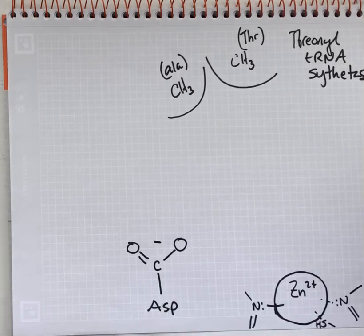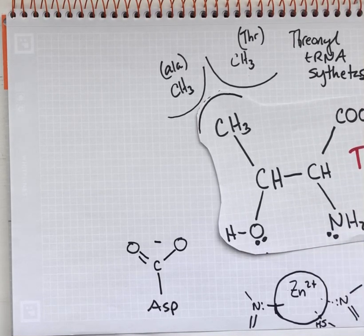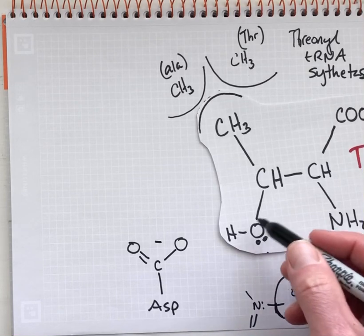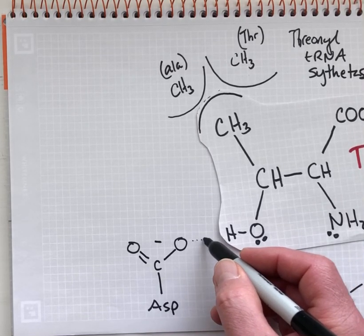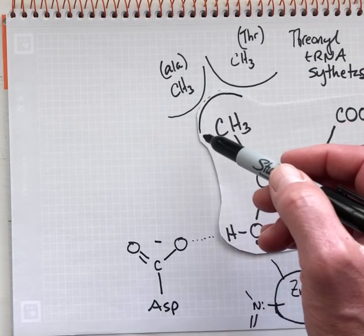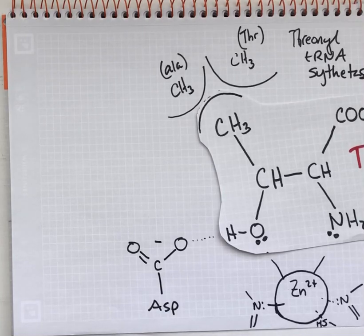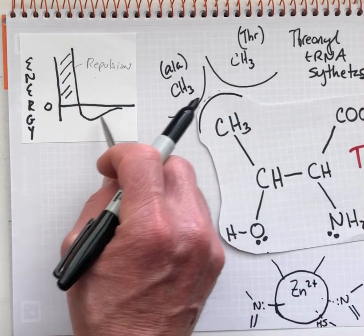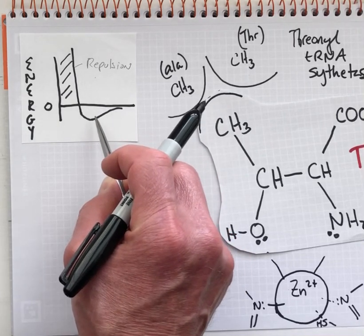The enzyme is searching for amino acids that fit into the specificity pocket. When we bring in the amino acid threonine, it has just the right shape and can make favorable interactions with the zinc ion. The amino group can make a metal coordination bond to the zinc. The hydroxyl group, which is a characteristic feature of threonine, can also coordinate to that metal ion and can make a hydrogen bond to the aspartate. The methyl group can make van der Waals contact with the alanine and threonine side chains of the enzyme. All of these molecular interactions are favorable — energies below zero, attractive — encouraging recruitment of threonine into the enzyme active site.